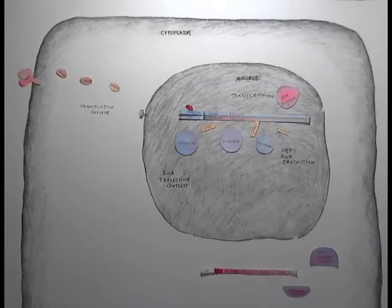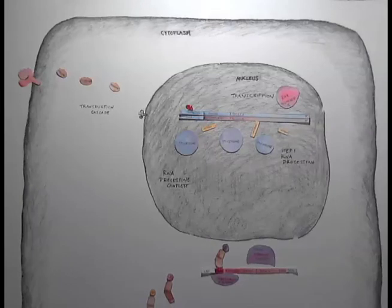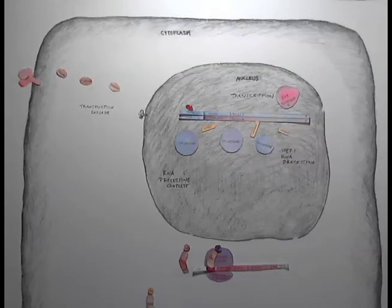Soon after, a small ribosome subunit binds, and then a tRNA carrying the amino acid methionine binds to the start codon, then the large ribosome subunit binds.